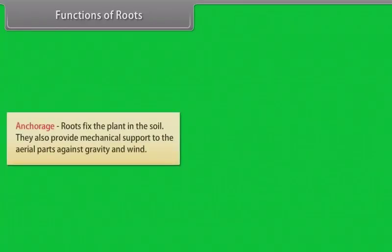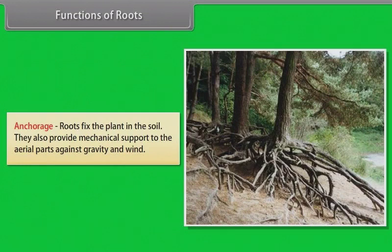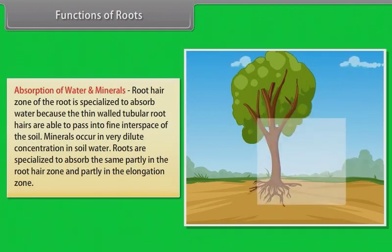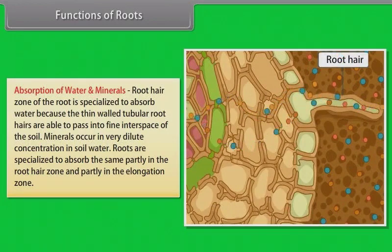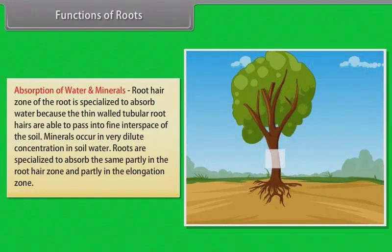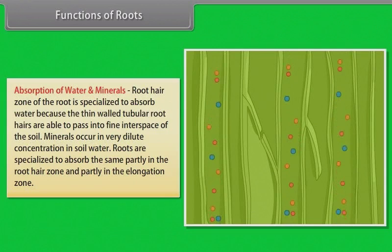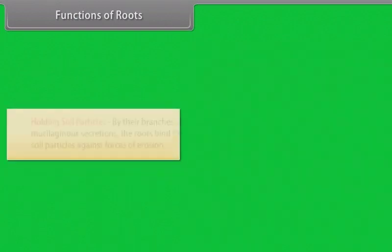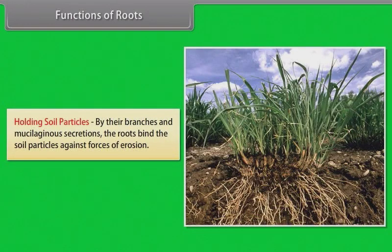Functions of roots. Anchorage — roots fix the plant in the soil and provide mechanical support to aerial parts against gravity and wind. Absorption of water and minerals — the root hair zone is specialized to absorb water; thin-walled tubular root hairs pass into fine interspaces of the soil. Minerals occur in very dilute concentrations in soil water and are absorbed partly in the root hair zone and partly in the elongation zone. Conduction — water and minerals are conducted through the root system to the shoot system. Holding soil particles — by their branches and mucilaginous secretions, roots bind soil particles against forces of erosion.